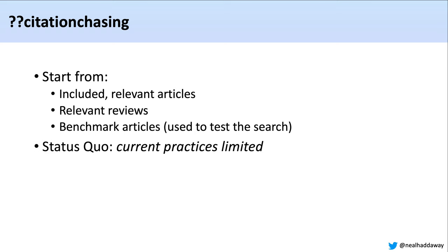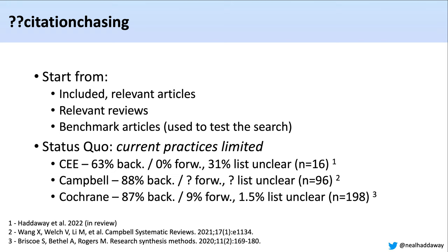Something worth mentioning is how citation chasing is performed at the moment in some of the best studies — gold standard systematic reviews. Unfortunately, it's not great. We looked at reviews published by the Collaboration for Environmental Evidence, and out of 16 published in the last couple of years, 63% have performed backward citation chasing, but none have performed forward citation chasing. And in 31% of cases it wasn't clear which articles were used as a starting point. For reviews published by the Campbell Collaboration, a recent study showed that 88% did perform backward citation chasing.